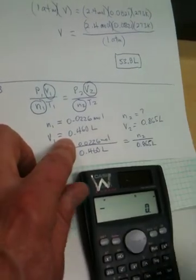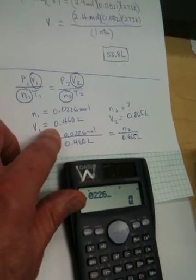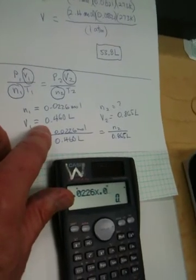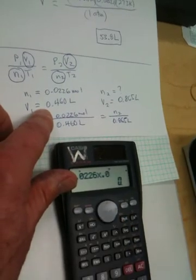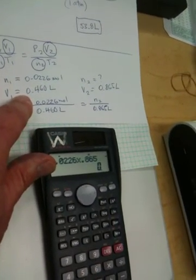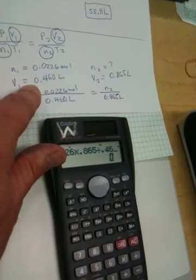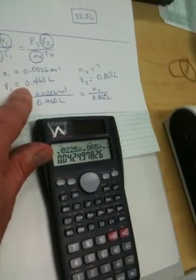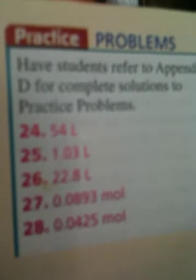Because we can cross-multiply. So I'm going to put 0.0226 times 0.865, and then we're going to divide by 0.460. So now when we get our solution here, we come up with 0.0425. And that's the number that the book actually gave us for the answer.